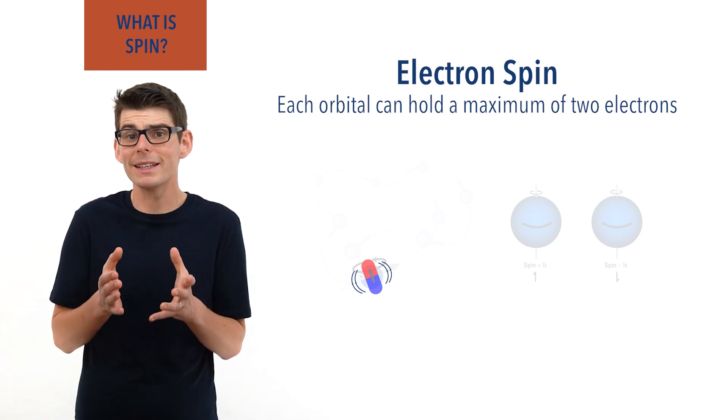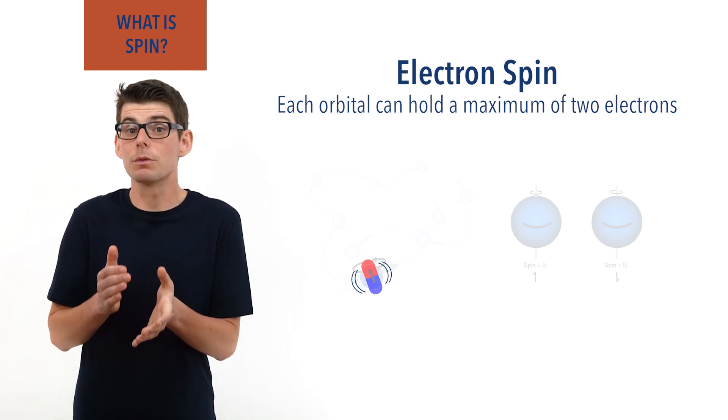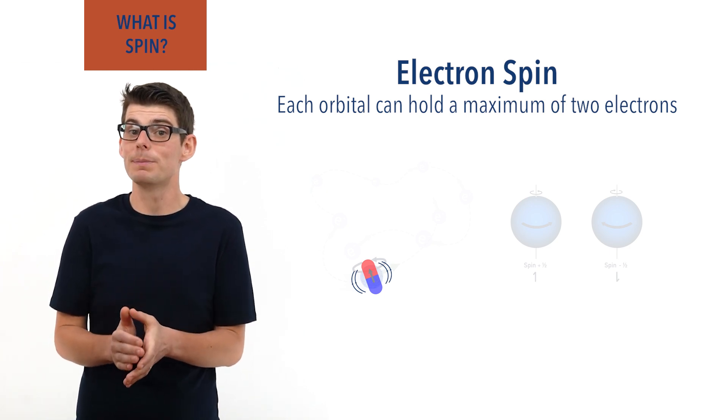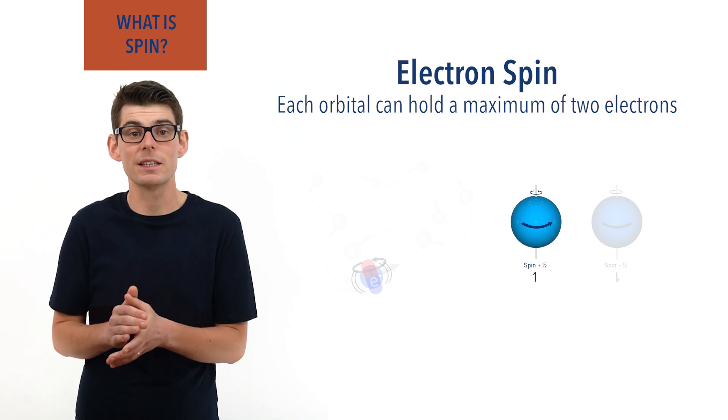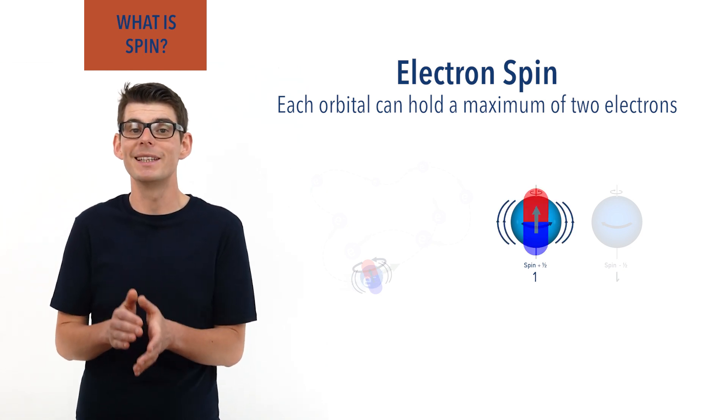Now magnetic fields have a direction based on north and south. As a result an electron that is spin up will have a magnetic field with an opposite direction to an electron that is spin down.